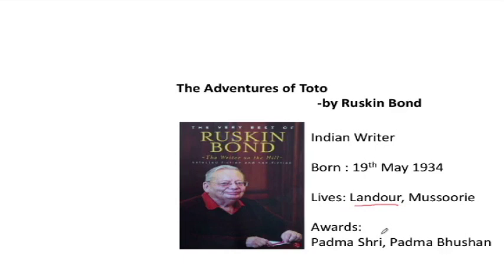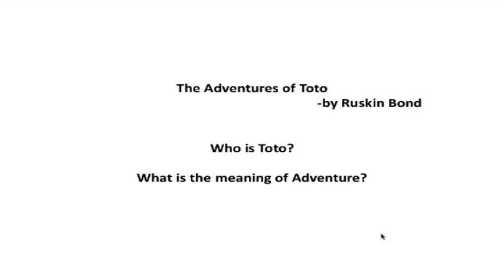Before we read the story, let us look at some words. What do you mean by adventure? You know the word adventure — we have lots and lots of adventures. And likewise, what is Toto? Who is Toto? Let us find out. Toto is the name of a baby monkey. So this is a story about a small monkey called Toto.